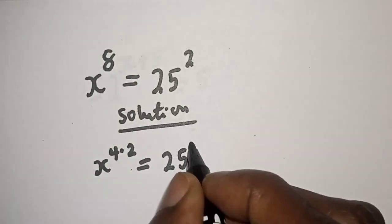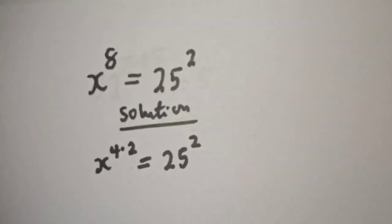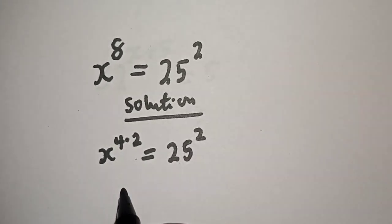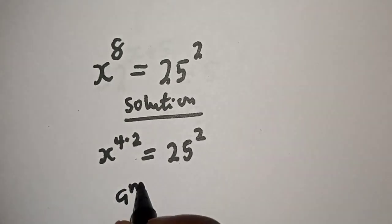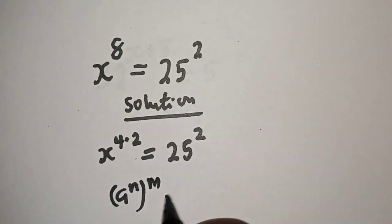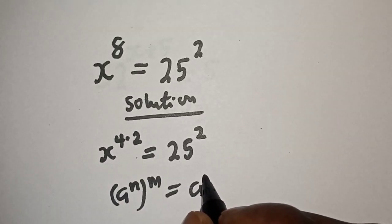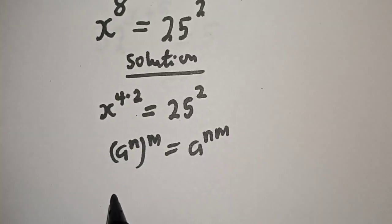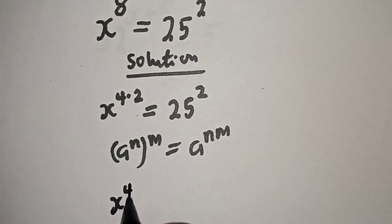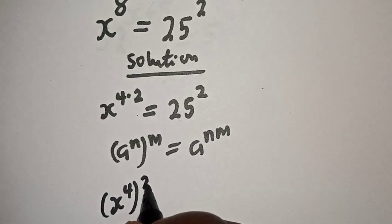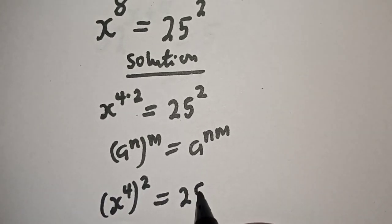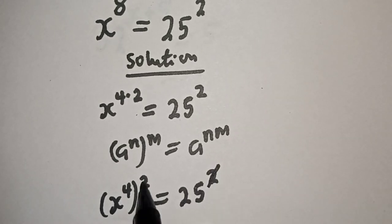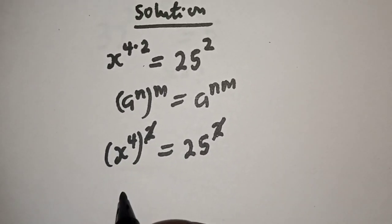Take note of this exponential rule: if you have a raised to power n, to the power of m, it is equal to a raised to power n times m. Then this can be written as s raised to power 4, raised to power 2, is equal to 25 squared. The squared exponents cancel.